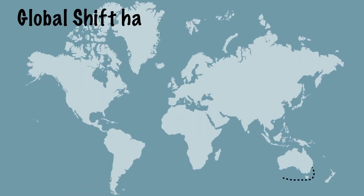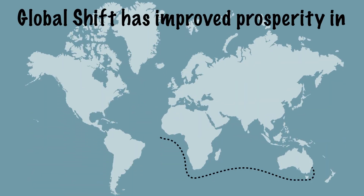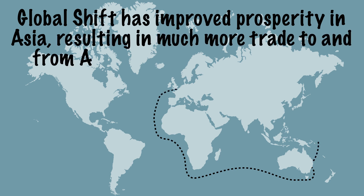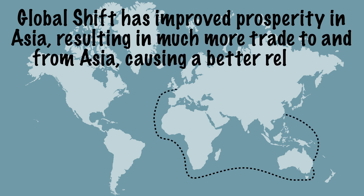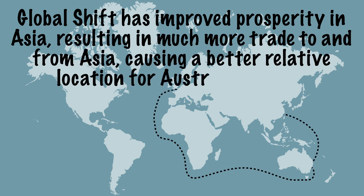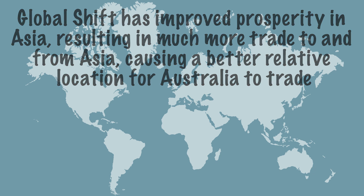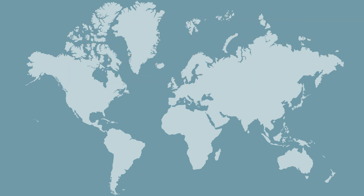Another good example is Australia. Global shift has improved prosperity in Asia, resulting in much more trade to and from Asia. Australia can sell products in Asia due to rising incomes. The relative position in international trade of Australia has thus improved due to global shift.